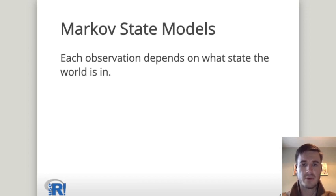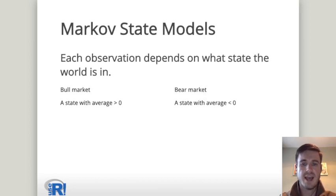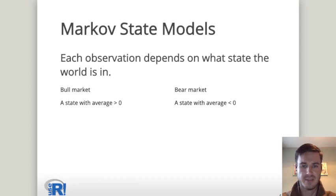In Markov state models, each observation depends on what state the world is in. So in this case, a bull market would be a state where the average is greater than zero because it is going up and increasing every day, and a bear market would be the opposite — a state where the average is less than zero because it is decreasing every day.